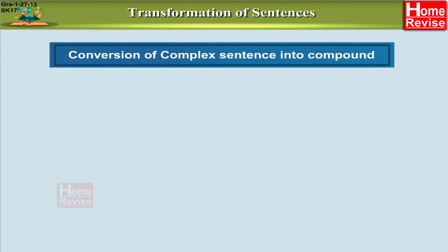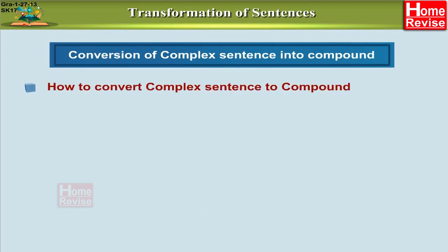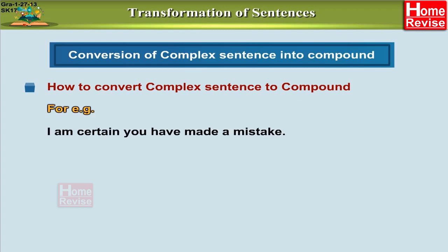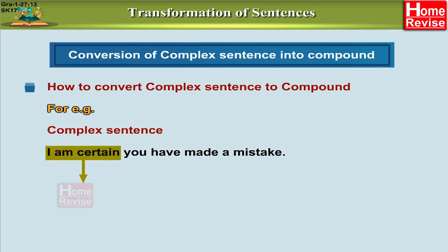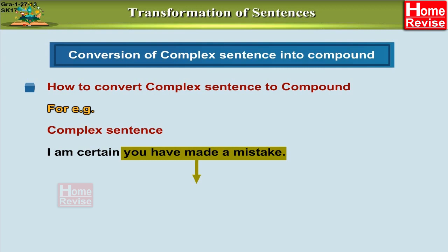Now we are going to learn to convert a complex sentence into a compound sentence. Consider: 'I am certain you have made a mistake.' It's a complex sentence in which 'I am certain' is the main clause. The conjunction 'that' is hidden — it is not seen in the sentence but it is very much there. 'You have made a mistake' is the subordinate clause.